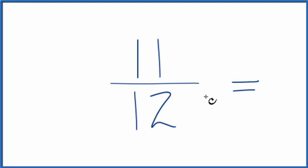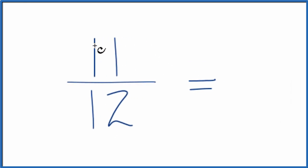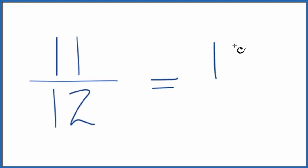But the only thing that divides evenly into 11 and 12 is 1. So if you divide 11 by 1, you get 11. If you divide 12 by 1, you get 12.